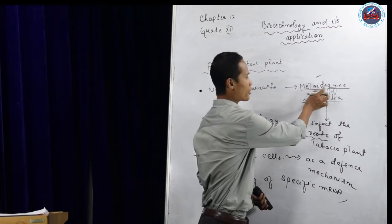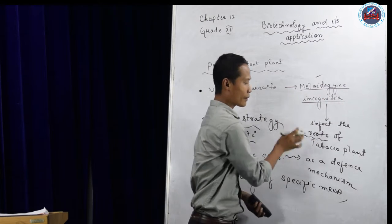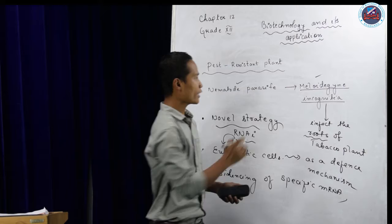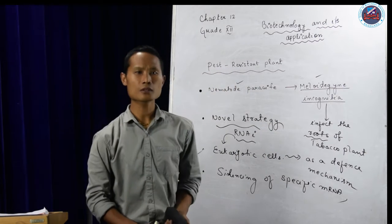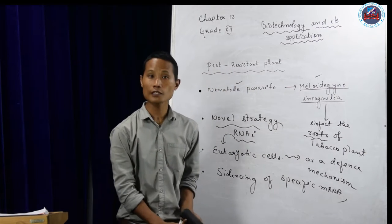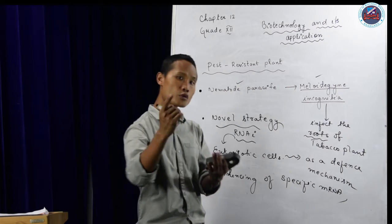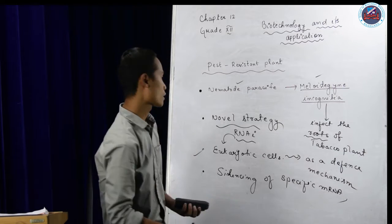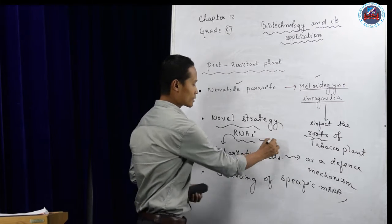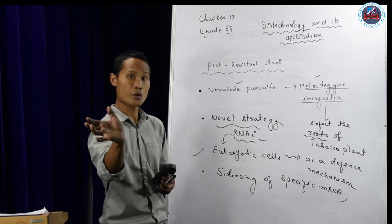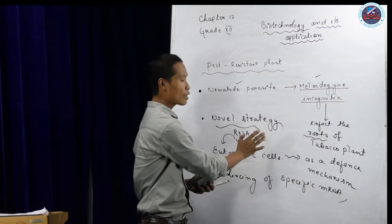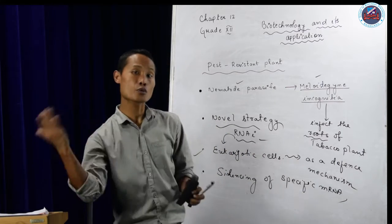Even though Melodogne incognitia infects the tobacco plant, they have to undergo replication, then transcription, then they have to produce protein. So if we don't allow the protein to be formed, then we call this RNA interference. We are interfering the process of transcription. We will not allow the mRNA to produce protein.